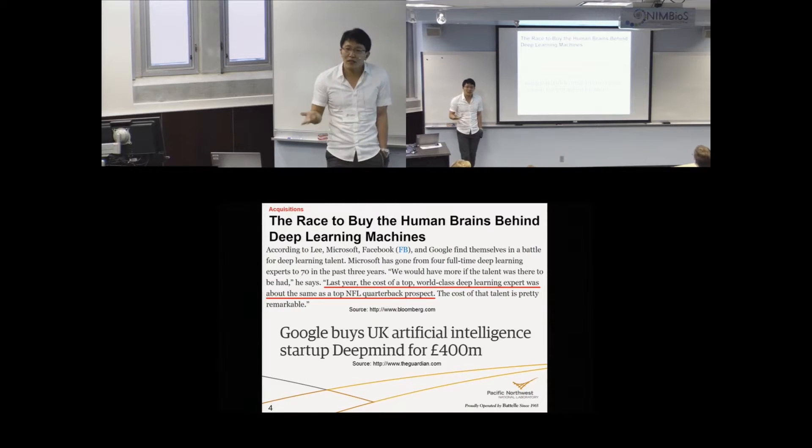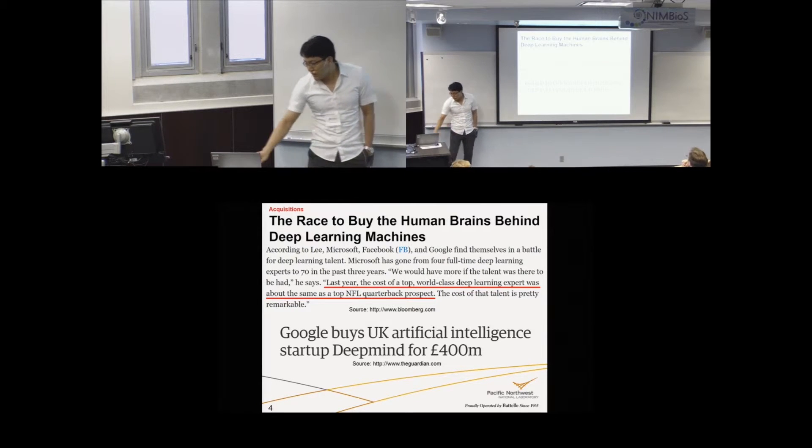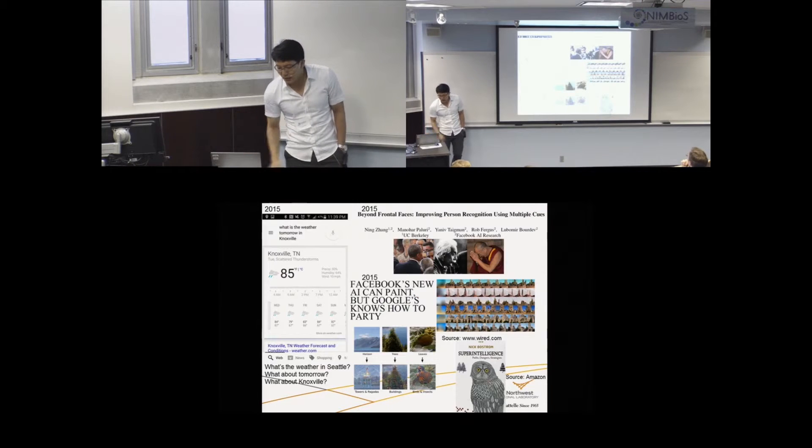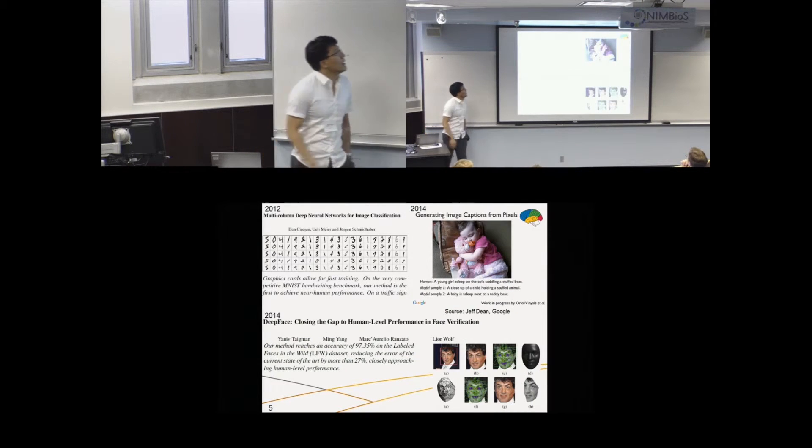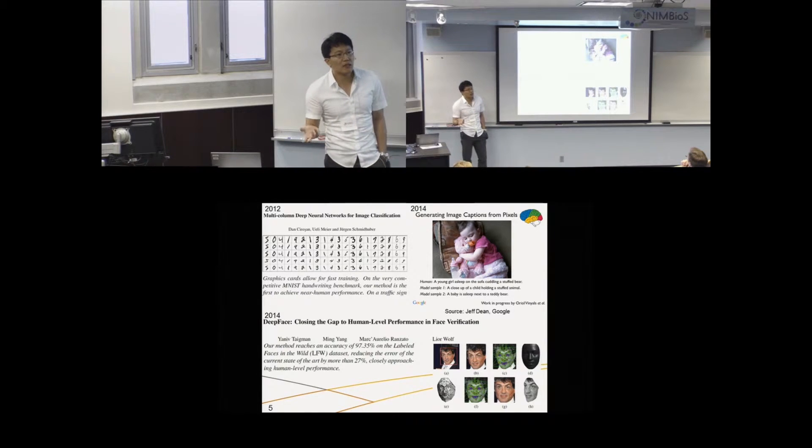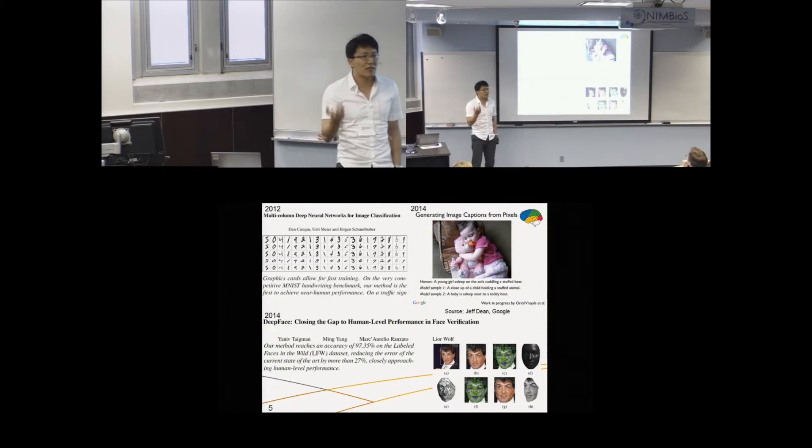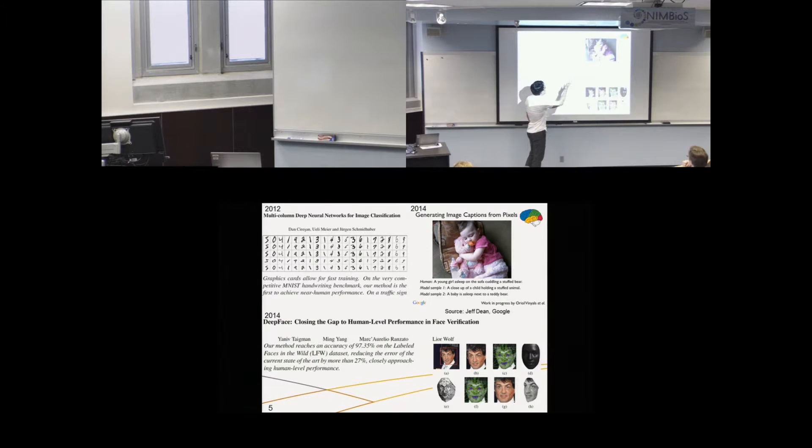The salary for the top machine learning researchers is reaching that of NFL superstars. There are many startups and big companies like Google, Facebook are buying those for many, many million dollars. So with this amount of money and talents, let's see how fast things can go. In 2012, a machine learning architecture started to match the performance of human in recognizing handwritten digits. That's something significant but not super impressive. But just two years later, machine learning architecture started to recognize images. By just seeing this image, computer can tell that this is a close-up of a child holding a stuffed animal.